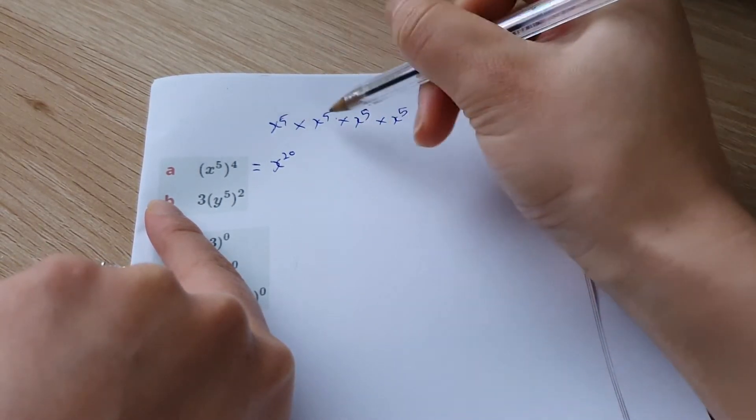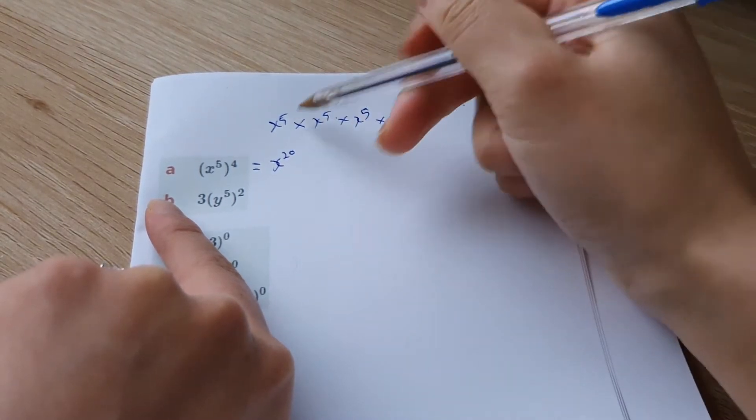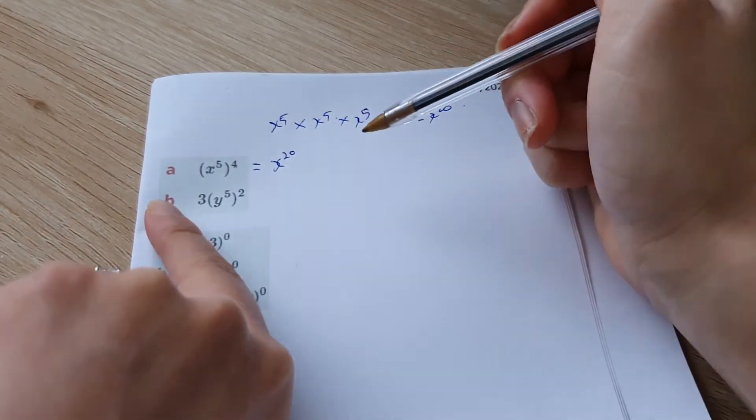So technically, we've actually got five plus five plus five plus five. That's going to equal to 20. But there's obviously, this is a short way of doing it.